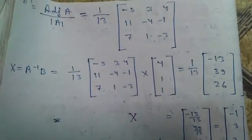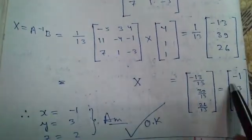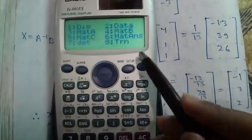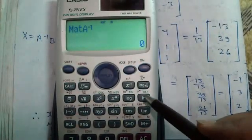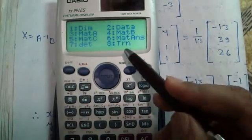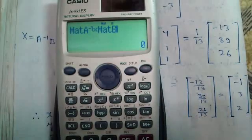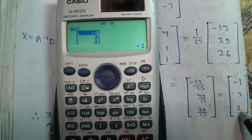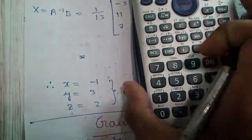You can directly find out the solution. X equals to A inverse of B. X equals to minus 1, 3, and 2. So X equals to minus 1, Y equals to 3, and Z equals to 2. Isn't it easy?